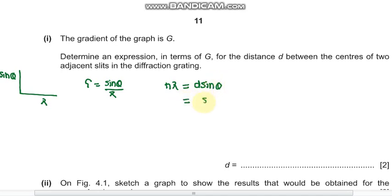So what you can do is sin θ by λ equals n by d. So this would become n by d equals sin θ by λ, which is our gradient, which is change in y over change in x. So that would be g. It tells us about the distance: n over d equals g, so d equals n over g.